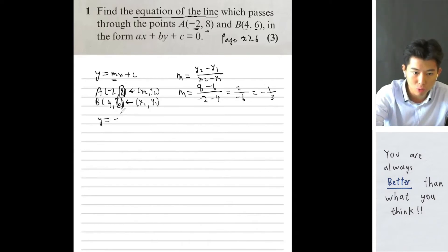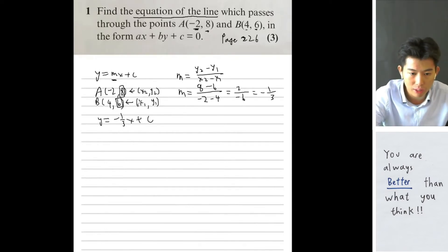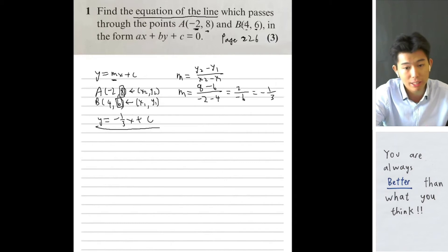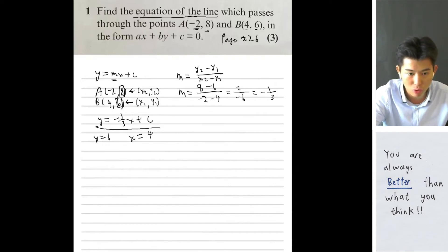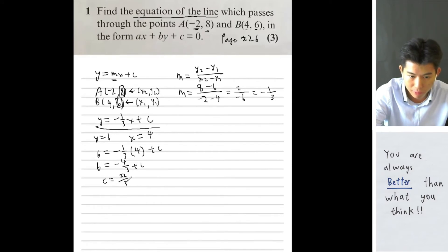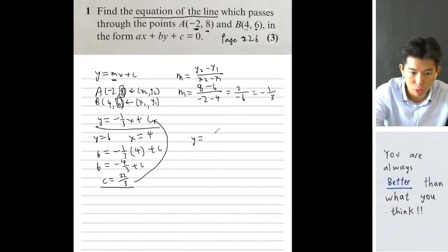Now substitute one of the points into the equation to find c. Using point B where x equals 4 and y equals 6: 6 equals minus 1 over 3 times 4 plus c, which gives 6 equals minus 4 over 3 plus c. Solving, c equals 22 over 3. Substituting back, y equals minus 1 over 3 x plus 22 over 3.